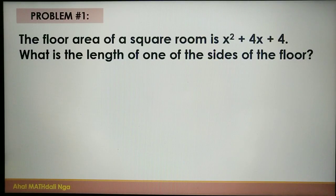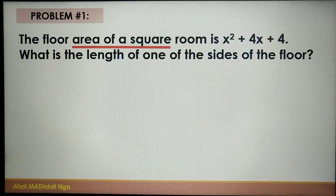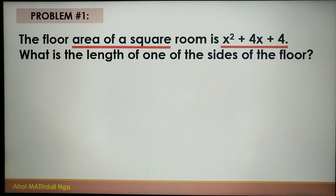Problem number 1. The floor area of a square room is x squared plus 4x plus 4. What is the length of one of the sides of the floor? I suggest you read the problem twice and find some clues that will help you solve it. You need to identify what is given and what is asked. In this problem, the given is the area of a square room, and you are asked to find the length of one of the sides of the floor.